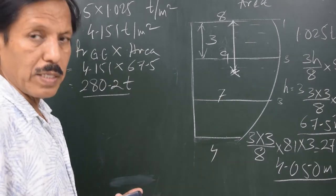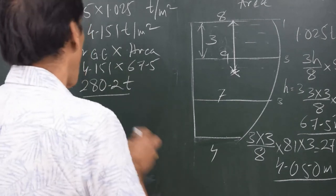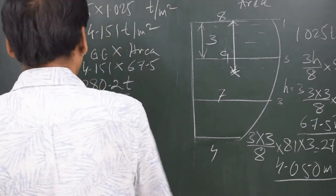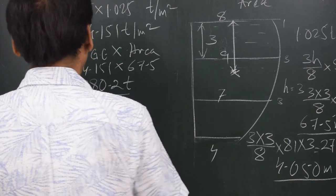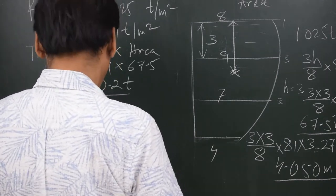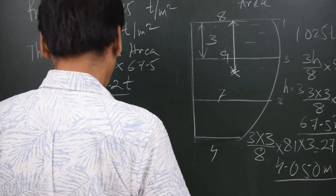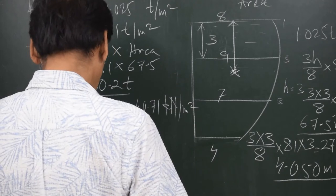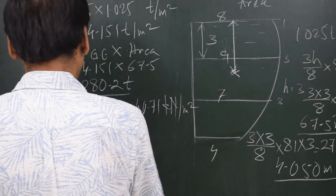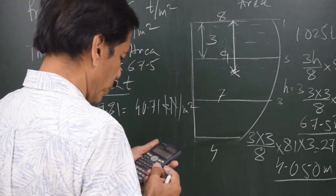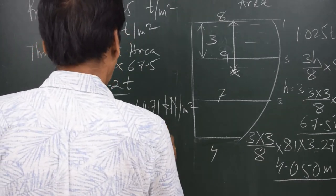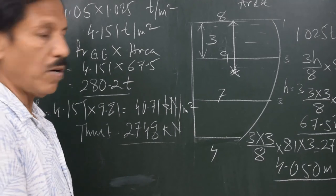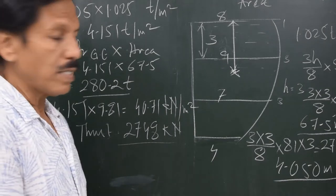In physics and engineering, values are often expressed in kilonewtons. Pressure at geometric centroid is 4.151 tons per meter square; multiplying by 9.81 gives 40.71 kilonewtons per meter square. Multiplying by the area of 67.5 square meters gives a thrust of 2748 kilonewtons. We were able to find the area of the curvilinear bulkhead using Simpson's Rule 2, since there were four ordinates and three segments divisible by three.